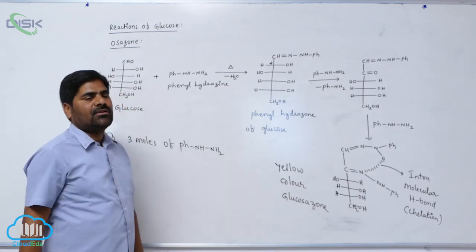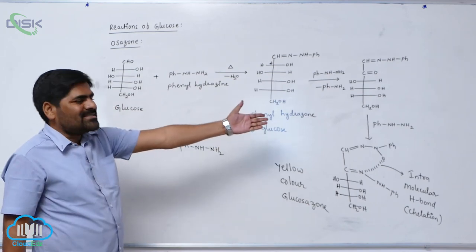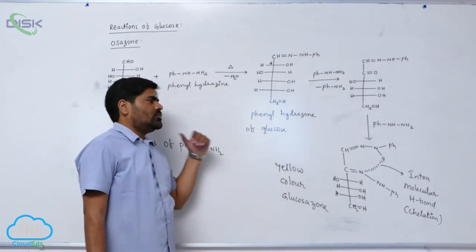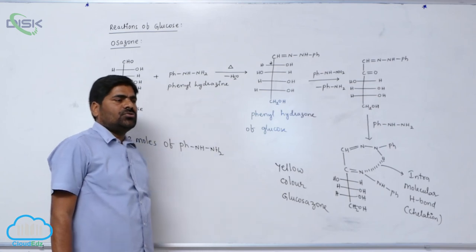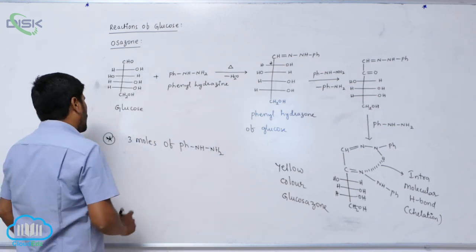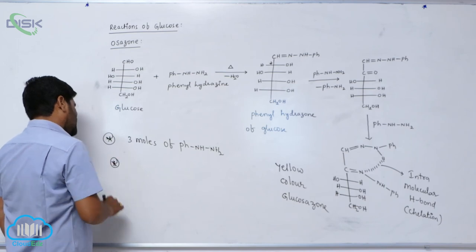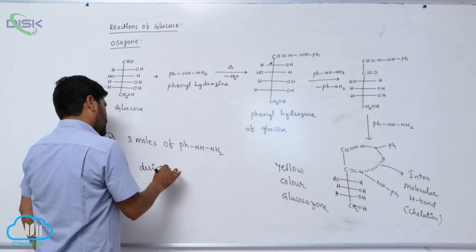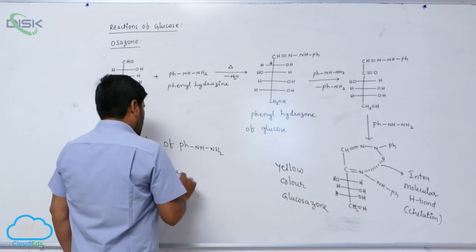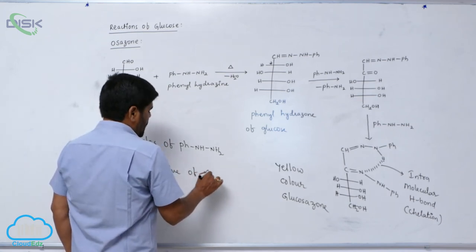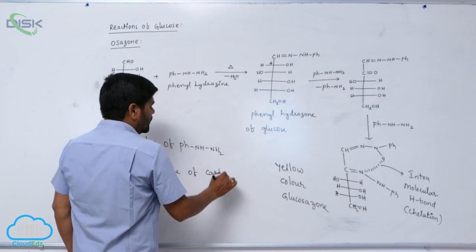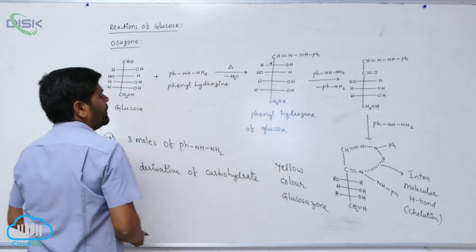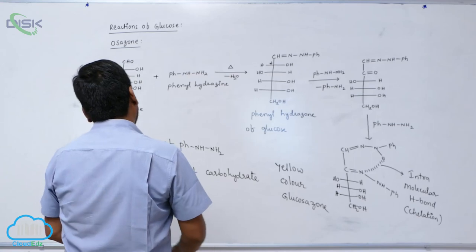The fourth mole cannot react because the stabilizing factor — intramolecular hydrogen bond — is predominant. This particular reaction is known as osazone formation. Osazone is a derivative of carbohydrates, specifically glucose, and the product is glucosazone.